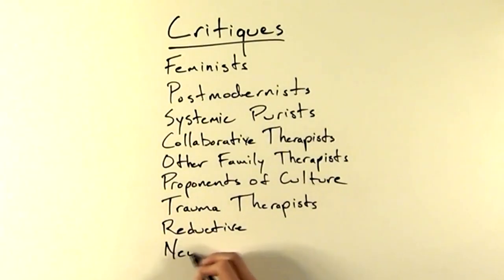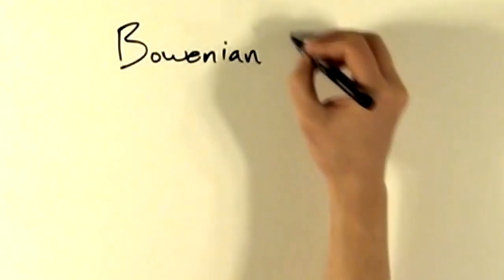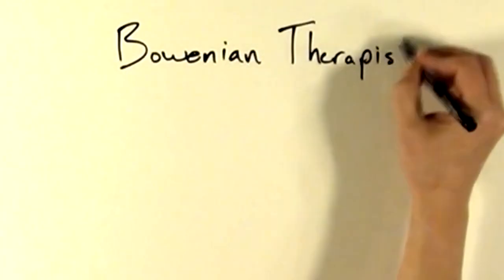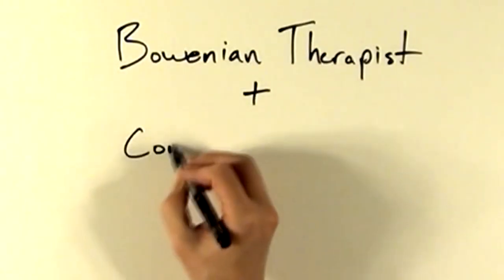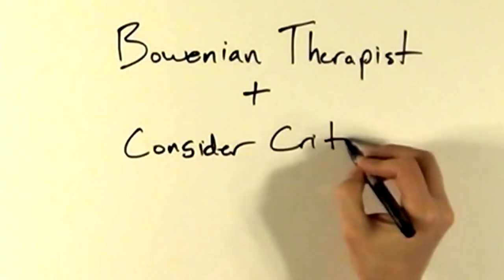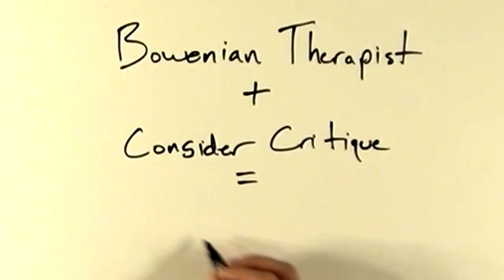In light of current neuroscience, some might argue that it is inaccurate to dichotomize thinking and feeling. Having said all that, all of my favorite approaches have at least some problems with them, and as long as these critiques are considered carefully by Bowenian therapists, I believe this form of therapy can be very helpful with many presenting problems, but probably not all.